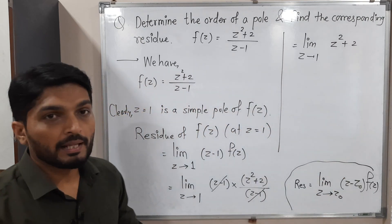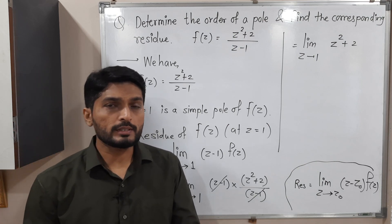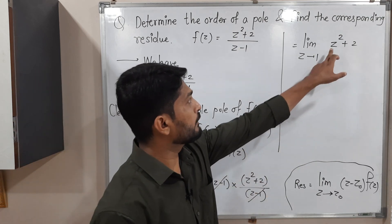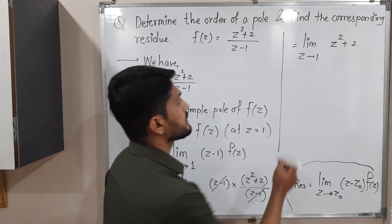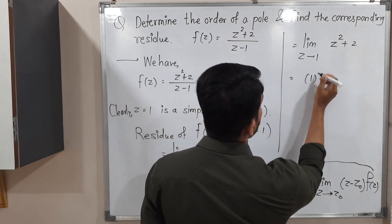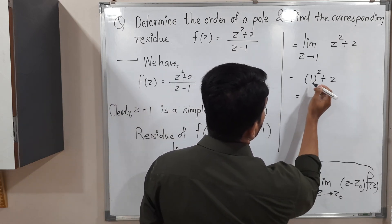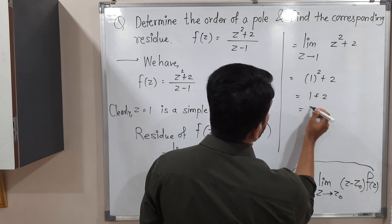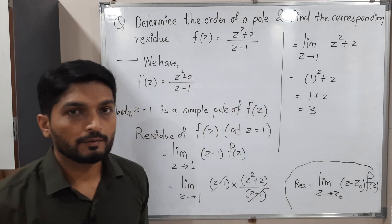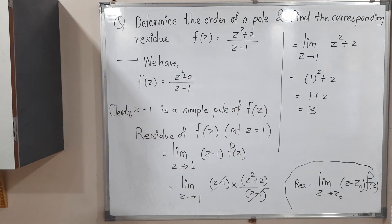Now it is time to apply limit. Apply limit means what? Simply put z = 1 everywhere. So this is equal to, if you apply the limit, 1² + 2 = 3. So 3 is the required residue. In this way, we finish this example, make a screenshot of it. Then we will stop and we will meet in next video. Thank you. See you.